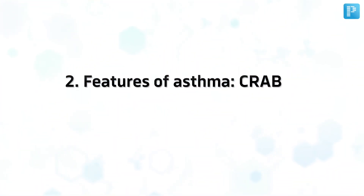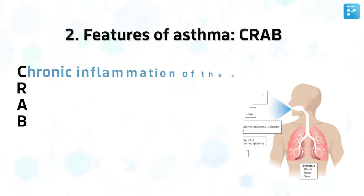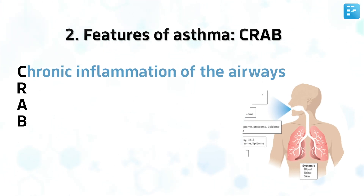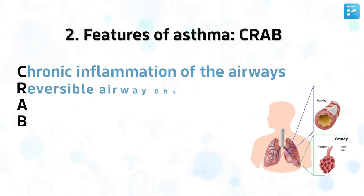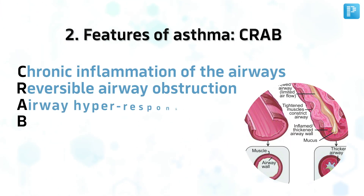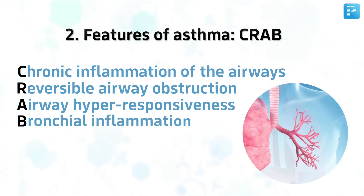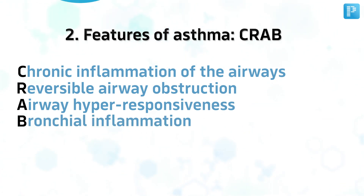Number 2. Features of Asthma: CRAB. Chronic inflammation of the airways, Reversible airway obstruction, Airway hyper-responsiveness, Bronchial inflammation.